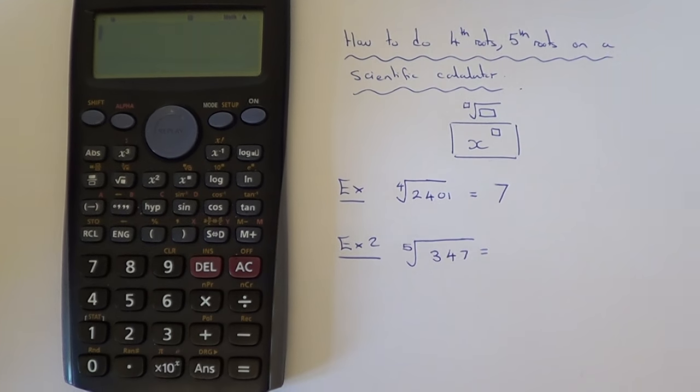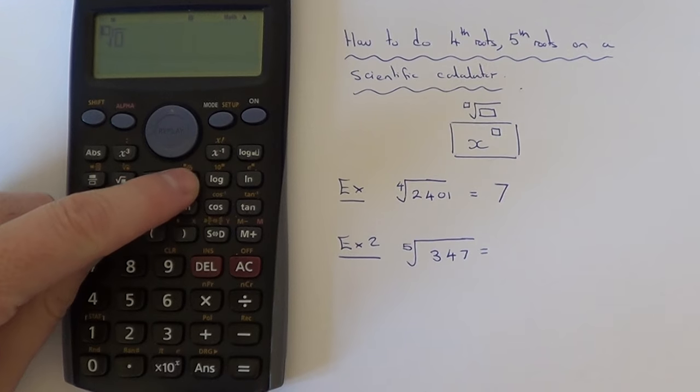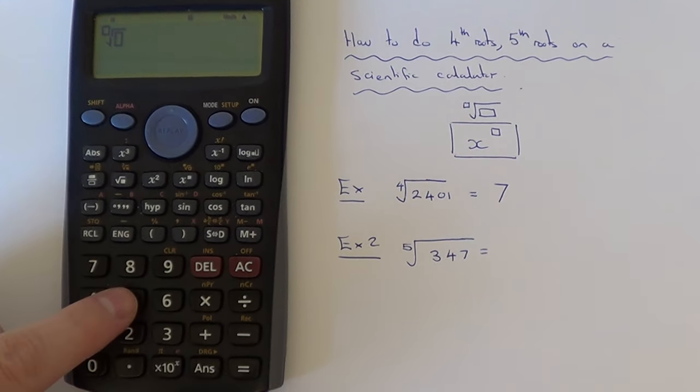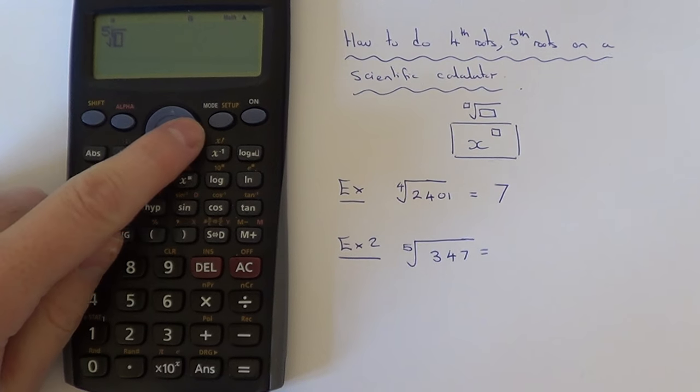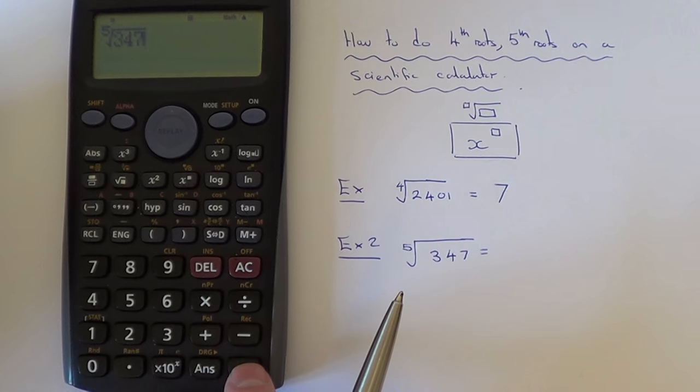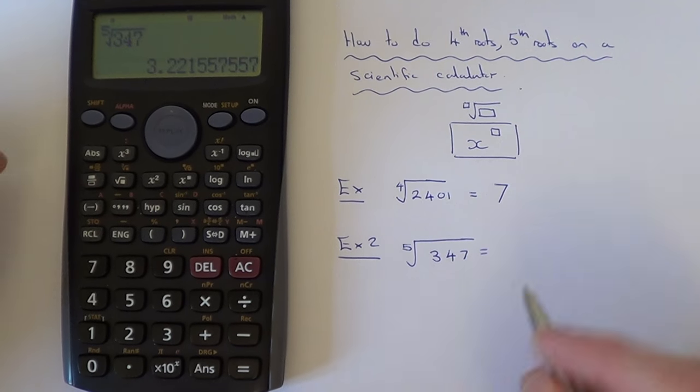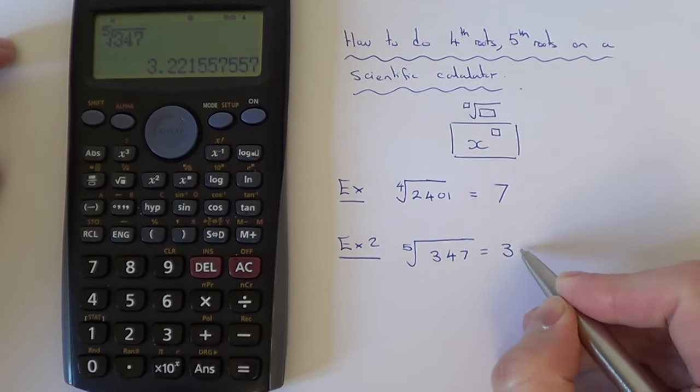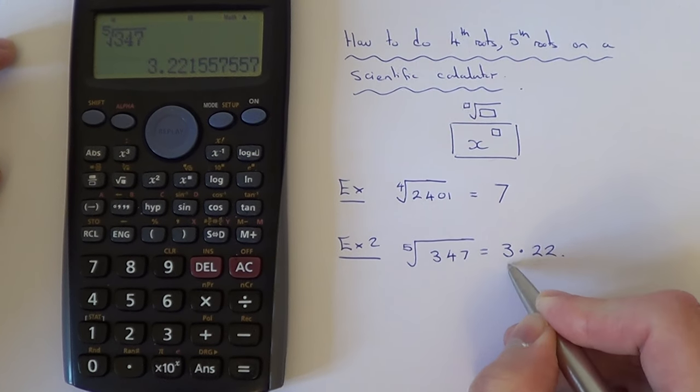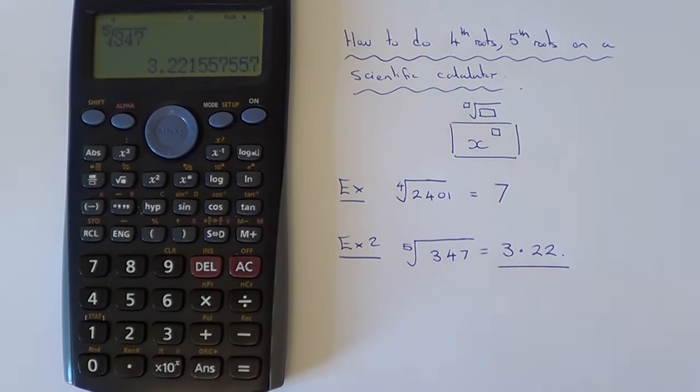Let's do example 2 then. This time we've got the 5th root of 347, so again we go shift, press the power key. Type in the 5 in the small box and then 347 underneath. Hit your equals and we can round that off to 2 decimal places, and we get an answer of 3.22.